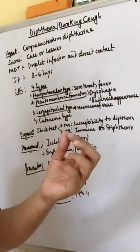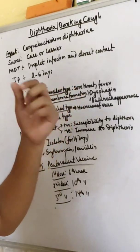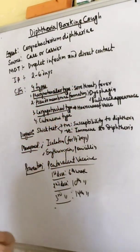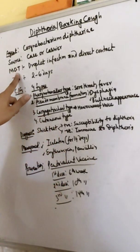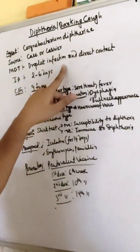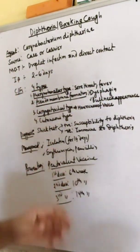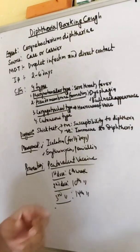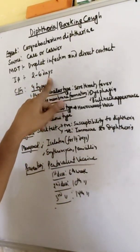In the case of a case and in the case of a carrier, the source is the throat and nasal area. The nasal carrier is more dangerous compared to the throat carrier. The mode of transmission is droplet infection and direct contact. The incubation period is 2 to 6 days.